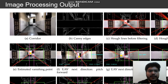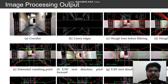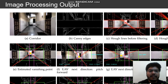The image processing output of the algorithm starts with the corridor image, which is converted to grayscale and then the Canny edge detection algorithm is applied. Next, the Hough line transform and other filters are applied to obtain the desired edges, and averaging of all detected lines is performed to get two lines intersecting at the vanishing point. Once the vanishing point is obtained, the drone rolls left or right depending on its position relative to the two vertical pink lines.